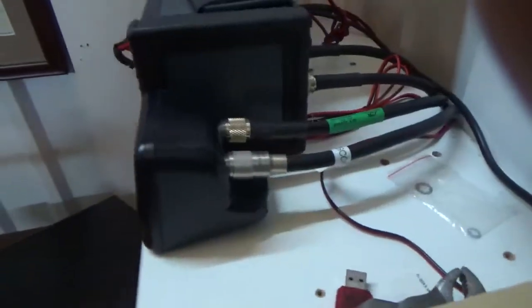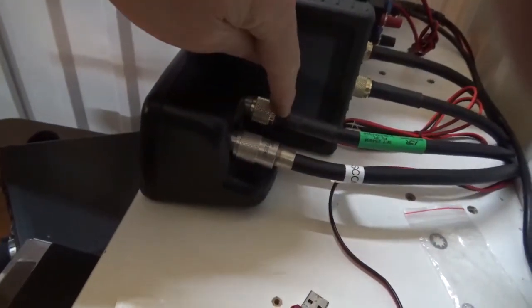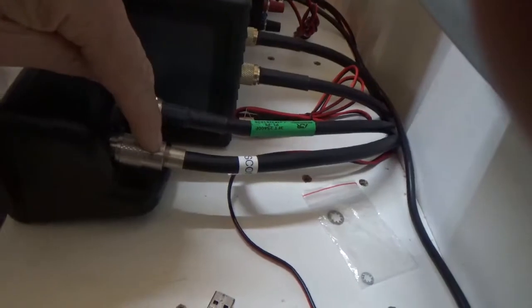I wanted to show you real quick - this is how I have my meter connected in the back. This is the signal coming from the radio, this is going out to the antenna, and both of these are tight.